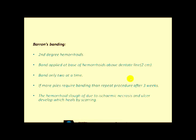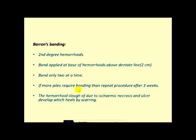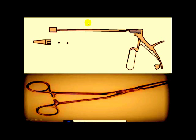The second method is rubber band ligation, done for second degree hemorrhoids. The band is applied at the base of the hemorrhoid at the dentate line. You should band only 2 at a time. If more piles require banding, wait 3 weeks before banding the next ones. The hemorrhoid sloughs off due to ischemic necrosis, leading to a wound that heals by scarring. This is the banding gun, these are the rubber bands, this is the conical cylinder to apply the rubber band, and this is the hemorrhoid-holding forceps. By this we hold the hemorrhoid, pull it, then fire the rubber band.